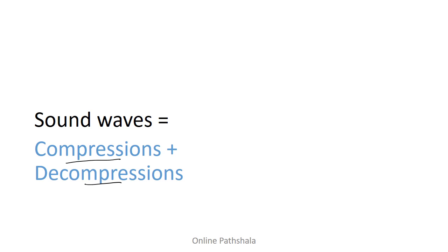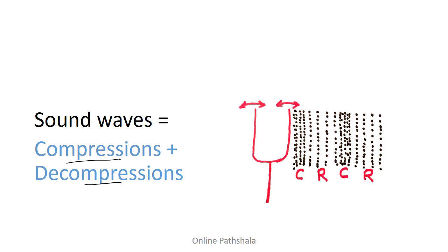You can actually visualize sound waves as a series of compressions and decompressions. What do we mean by compressions and decompressions? Here is an example of a tuning fork which is set into motion, and what you can see here is columns of air particles surrounding it. This is basically taking air surrounding the tuning fork. Air is a very common medium in which sound travels.